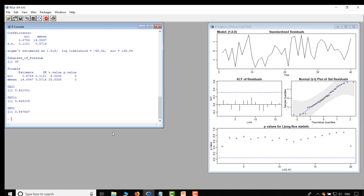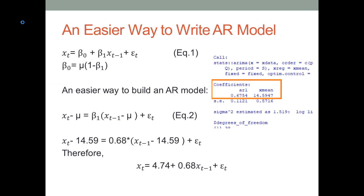This is the result. Let's go back to the PowerPoint to take a look at how we can use them. Once we get the result, the first step is to look at the coefficient values listed in the rectangle on this slide — we want to use these values to build the final AR model. There are two ways of building an AR model. If you use equation 1, the only unknown factor is beta 0, the intercept. In the stationary data assumption lecture, I talked about how to use the beta 1 value and mu value reported by the software to calculate beta 0.